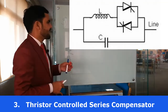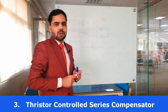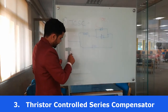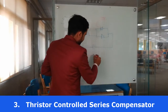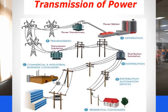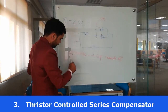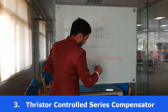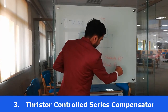The triggering angle alpha decides the operation. There are two conditions: if alpha is 180 degrees, then the whole system works as a capacitor and generates reactive power. On the other hand, when alpha is 90 degrees, it acts as an inductor and absorbs reactive power.